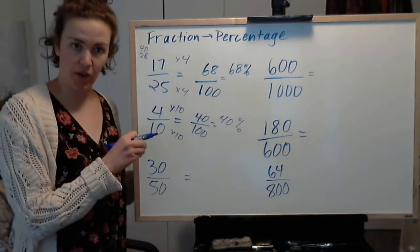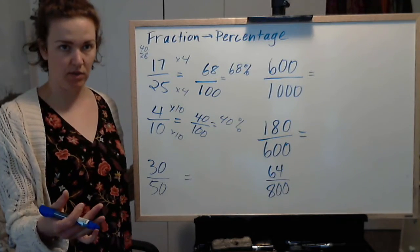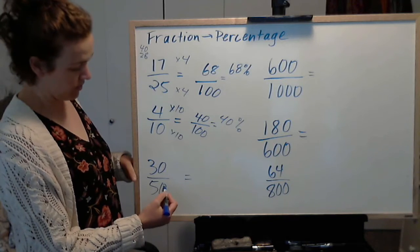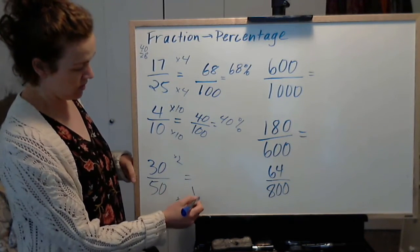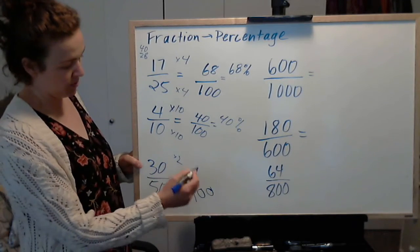So you can simplify a fraction and then work back up to 100 if you want. Now this is a lot easier to do, because 50 times 2 is 100.